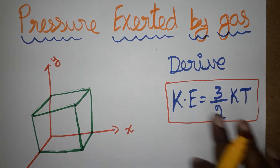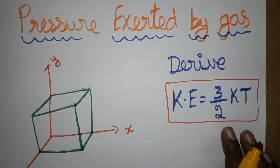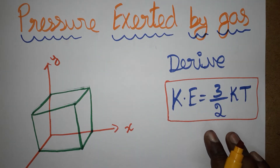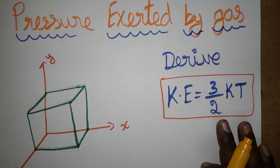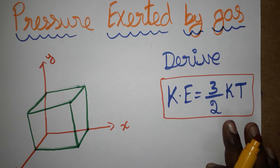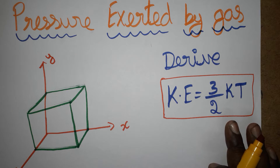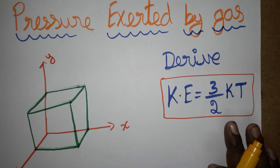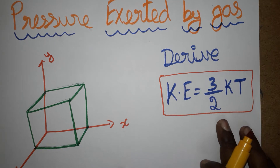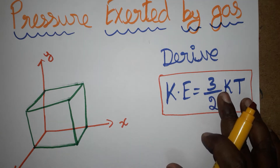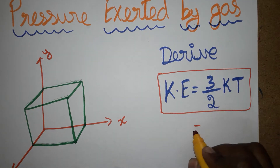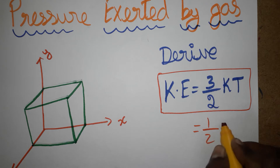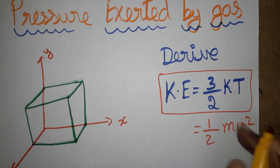Hello students, today we are going to learn pressure exerted by the gas, and also we are going to learn what is kinetic energy. Kinetic energy is equal to 3/2 kT. Previously we learned kinetic energy is ½mv². In kinetic theory of gases, kinetic energy is 3/2 kT, so this equation is equal to ½mv². Today we are going to learn how to derive this equation.